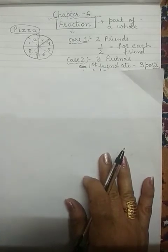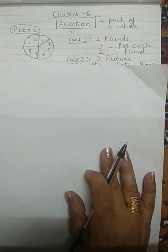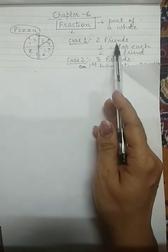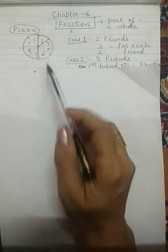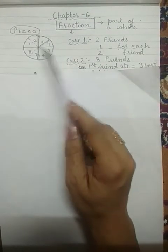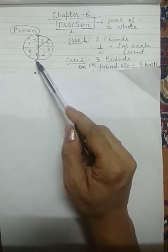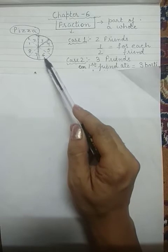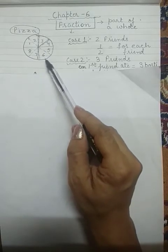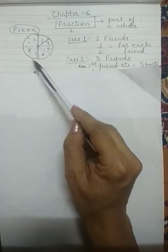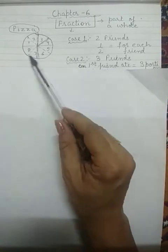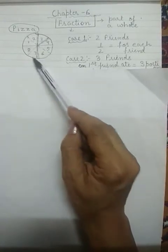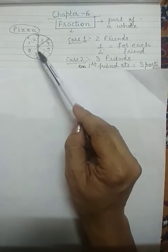Now case 2: instead of 2 friends, 3 friends are sharing this pizza. In this case, I have divided the pizza into 8 equal portions. Listen carefully — whenever we are dealing with fractions, make sure your whole thing is divided into equal portions. Here the equal portions for case 2 are 8: 1, 2, 3, and so on — this is how 8 slices of a pizza are made.